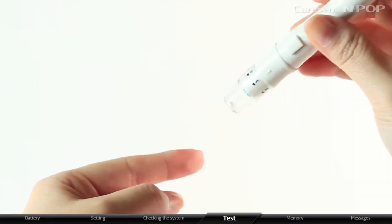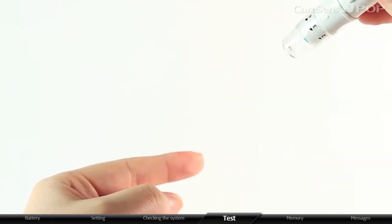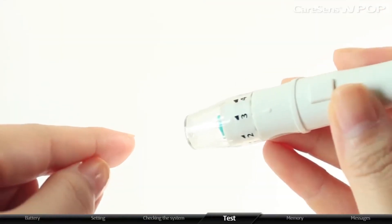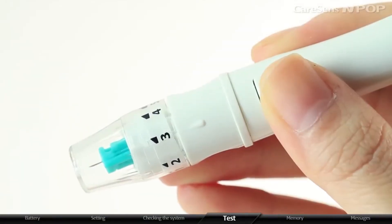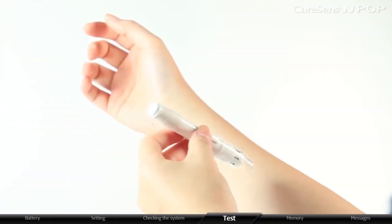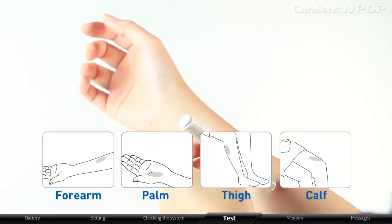Usually when someone tests their glucose, they take the blood sample from the tip of the finger. Since there are many nerve endings distributed there, it is quite painful if it is repetitively measured. In this case, you can minimize the pain by collecting blood from alternative testing sites such as the forearm, palm, thigh, or calf.